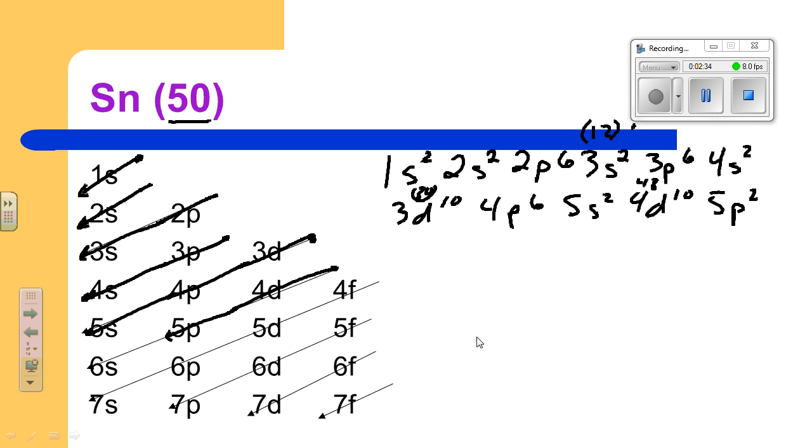So let's add these up again and make sure we've got 2, 4, that's 10, 12, 18, 20, 30, 36, 38, 48, 50 electrons for tin. And that's the electron configuration.